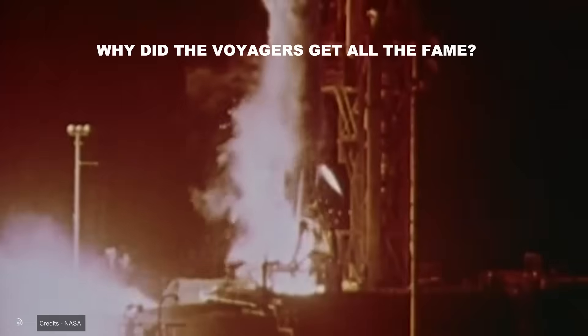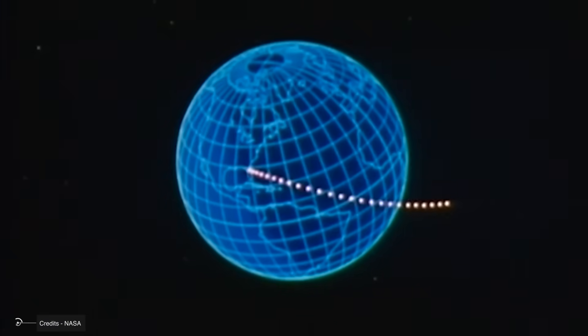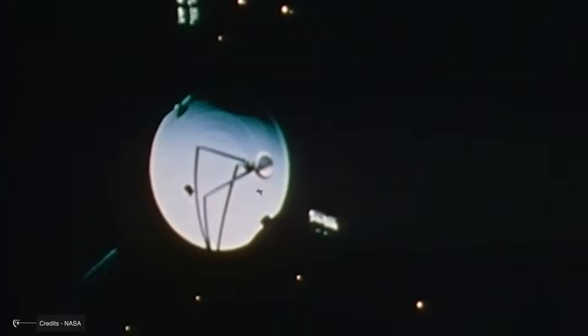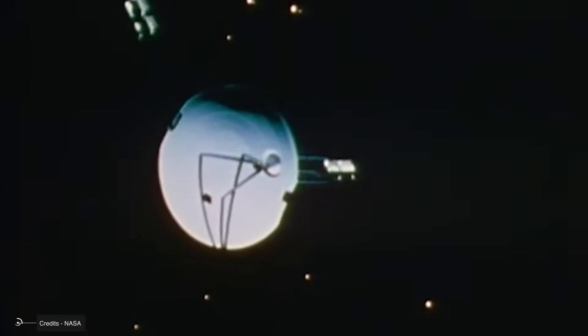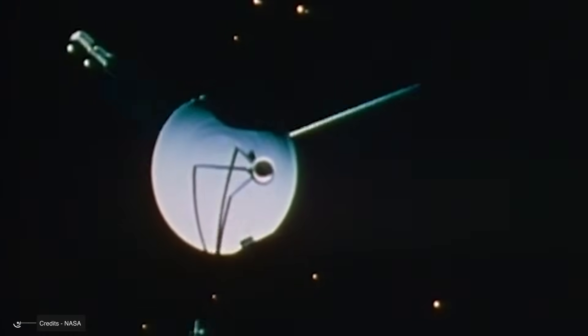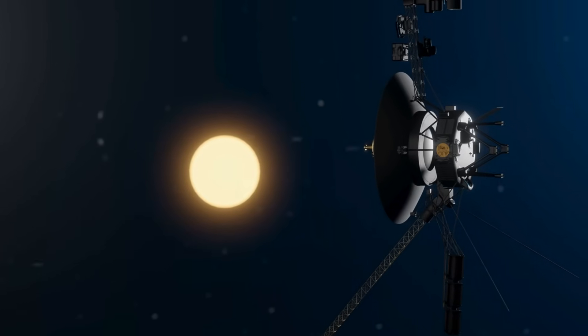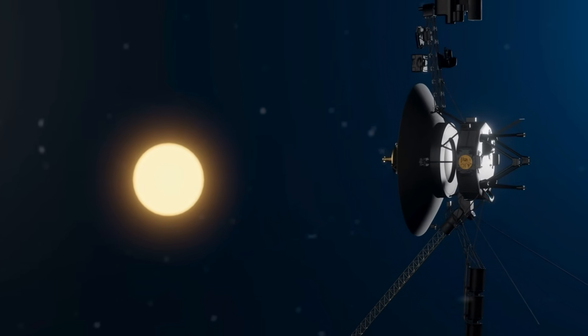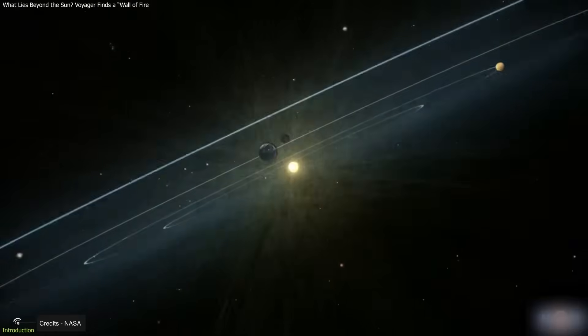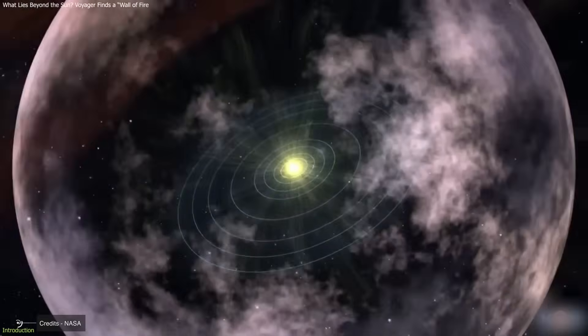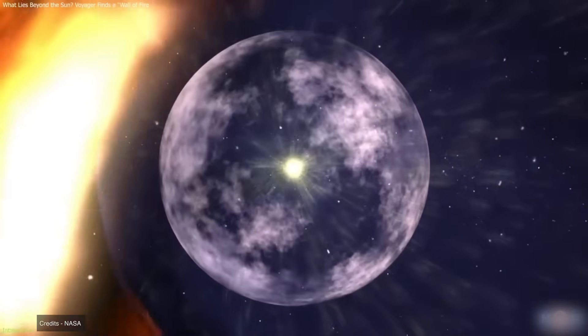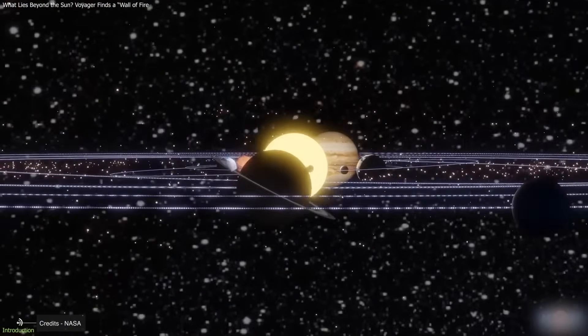So why did the Voyagers get all the fame? Because their missions were much more ambitious and detailed. Their camera and sensor systems were more advanced, and their planetary flybys provided images and data of unprecedented quality. Furthermore, they were the first to visit Uranus and Neptune in the case of Voyager 2, and the first to cross the Heliopause. At this boundary, the influence of the solar wind ends and interstellar space begins.